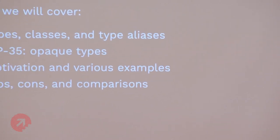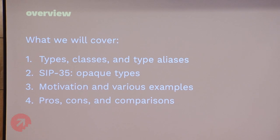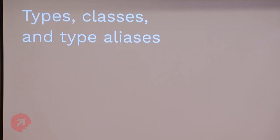There are four main sections to the talk. First, I want to talk about typed classes and type aliases, because I think sometimes the distinction gets lost and I want to make sure we're all on the same page before we dive into the actual SIP. Then we'll talk about the SIP itself — what it says. Then we'll cover the motivation and actual examples. Finally, I'll go through some pros and cons and compare it to value classes.